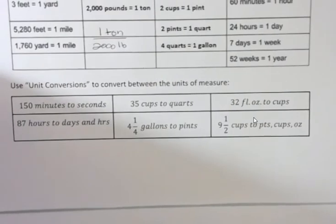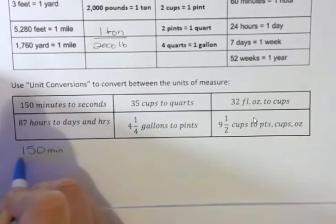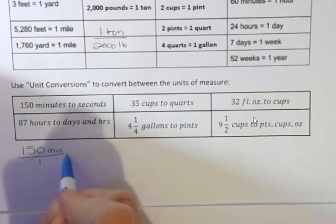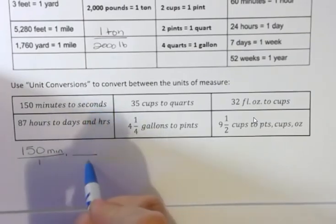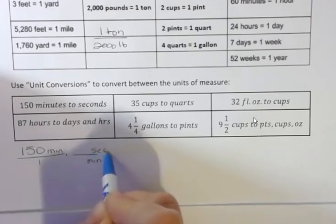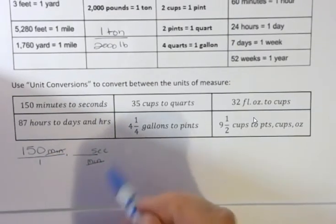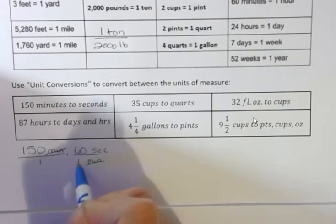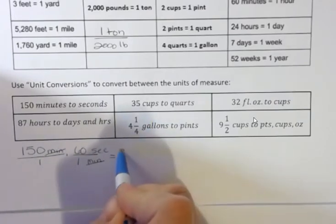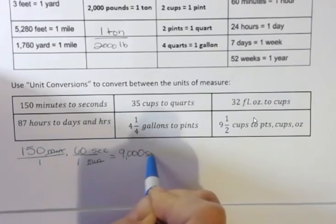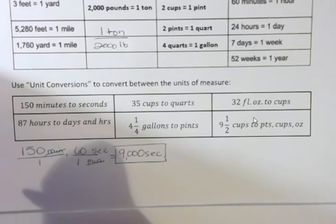In the first problem, I'm going to take 150 minutes and change that into seconds. I put the original unit over 1 and multiply by the unit fraction. I want to go from minutes to seconds, so minutes go on the bottom and seconds on the top so they cancel. The conversion is 60 seconds in one minute, so I multiply 150 times 60, which gives me 9,000 seconds.